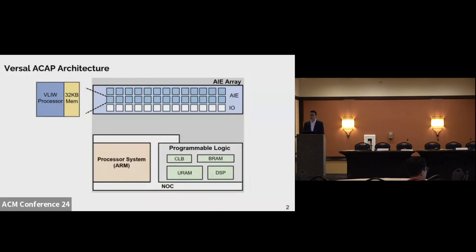Each AI engine is a very long instruction word supported vector processor with 32 kilobytes memory. For our target device, VCK 190, there are 400 AI engines, and the communication between the AIE and other components is through the 39 I/O tiles marked as the white box in the figure with up to 1.2 terabytes per second bandwidth.